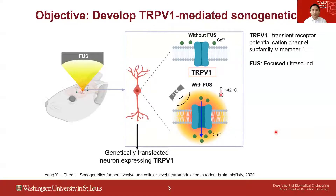As we know, ultrasound generates not only mechanical effects but also thermal effects. TRPV1 is a well-known thermosensitive ion channel with an activation threshold of about 42 degrees. So when the temperature is above this threshold, the channel opens and calcium influx into the cells to activate the neuron.